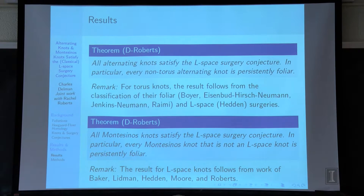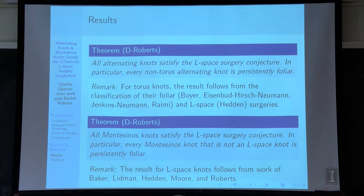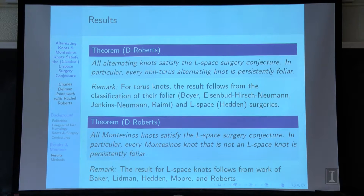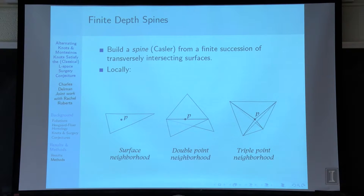For Montesinos knots, L-space surgeries have been classified by Baker, Lidman, Hedden, and Moore. Rachel Roberts has results for L-space knots — we know which range of surgeries gives L-spaces, and Rachel can prove the rest of the range gives foliar manifolds. I'm going to focus on the persistently foliar ones.